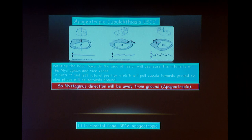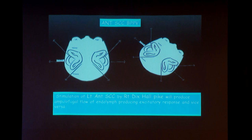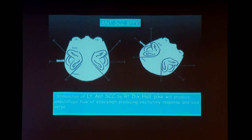Coming to anterior canal BPPV: here also I took the help of the Paint 3D software. I took a snapshot of a picture from a book and tried to rotate it to see the position of the left anterior canal when we do the right Dix-Hallpike test. As we know, to stimulate the left anterior canal we have to do the right Dix-Hallpike test. In this picture you can appreciate that we are not only stimulating the right posterior canal, but also stimulating the left anterior canal as well.